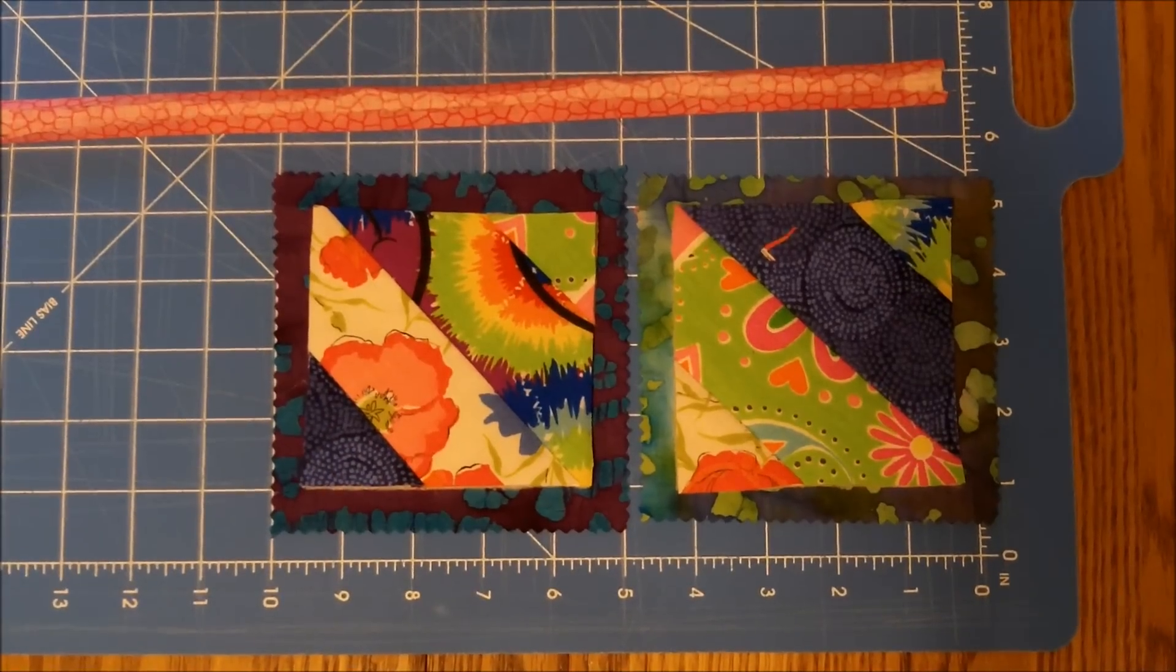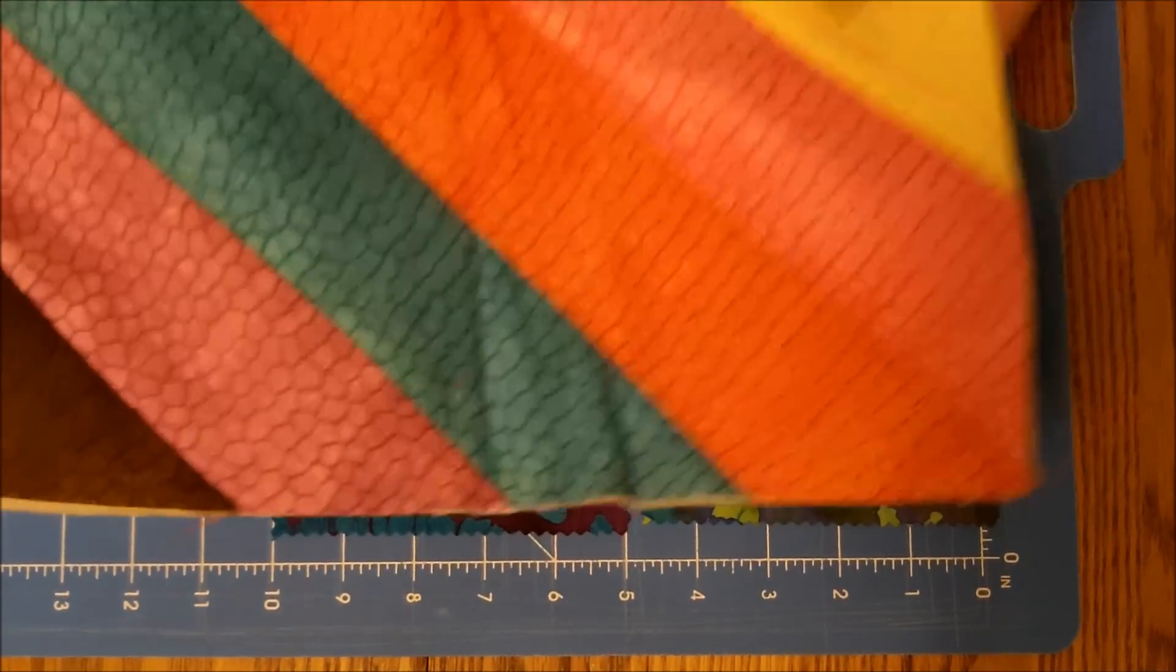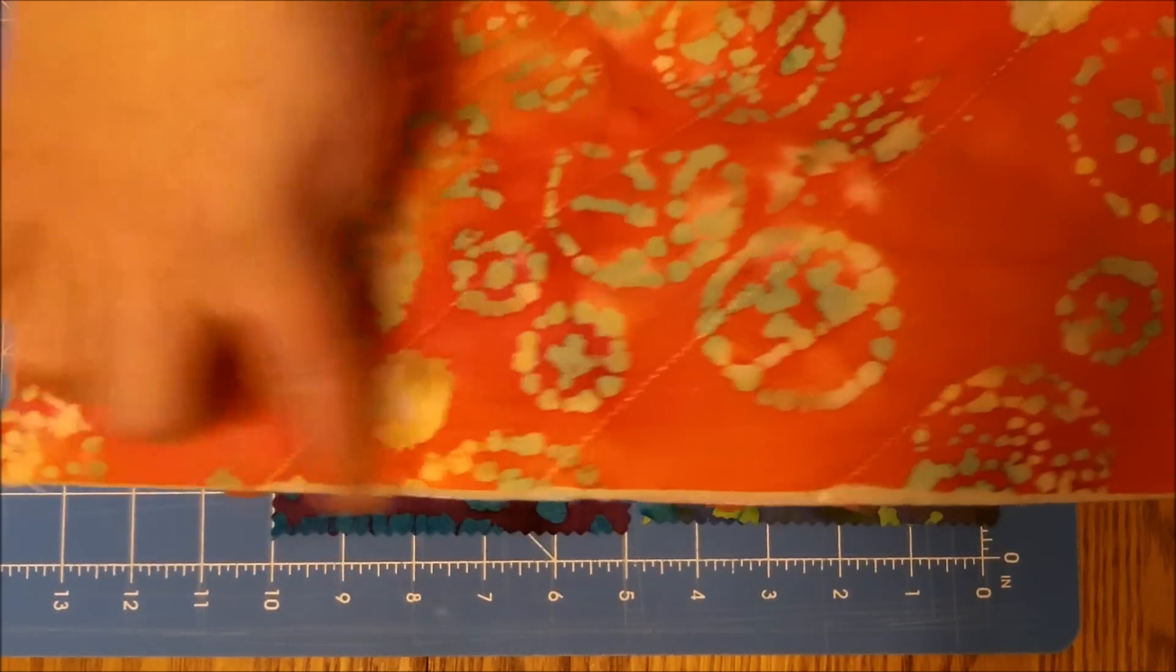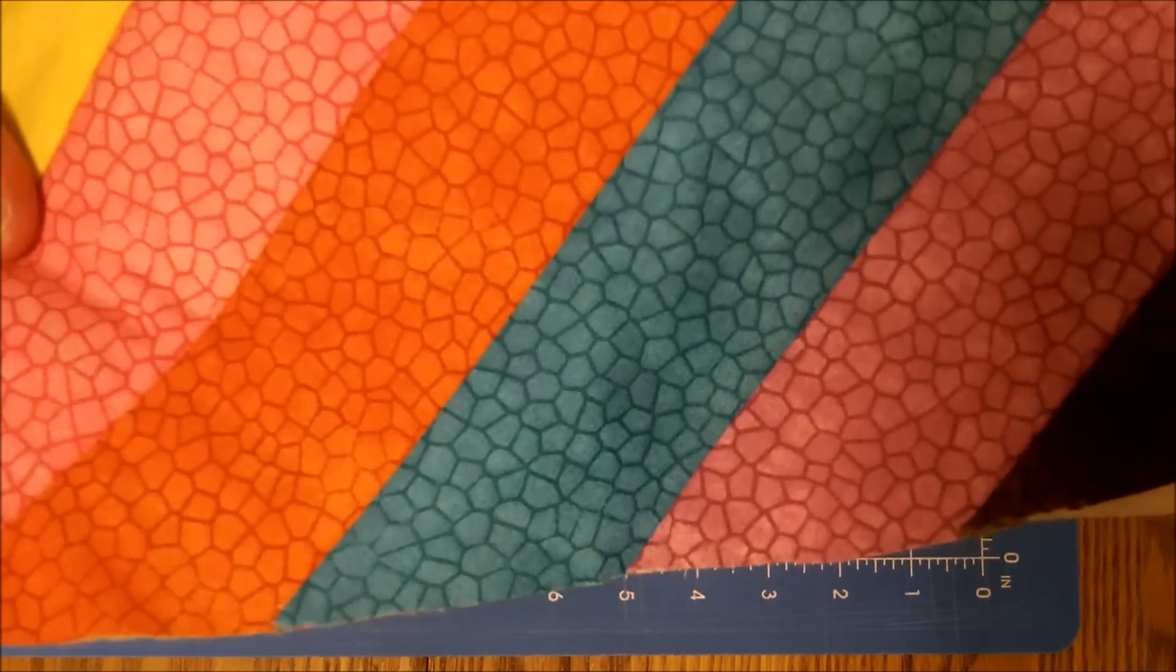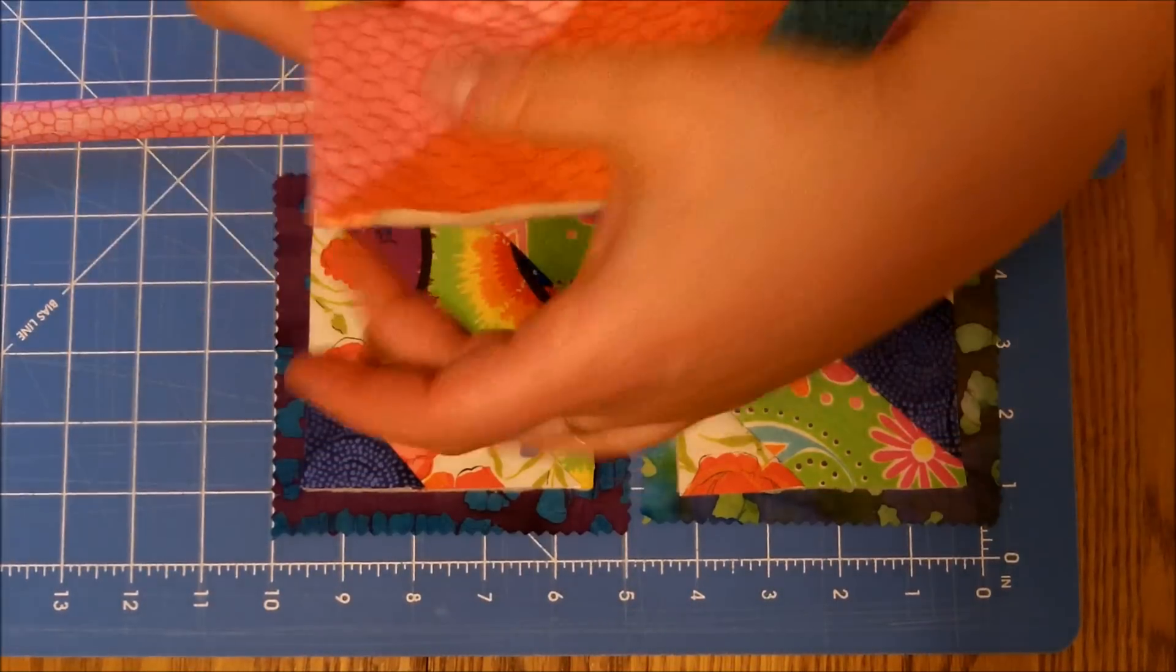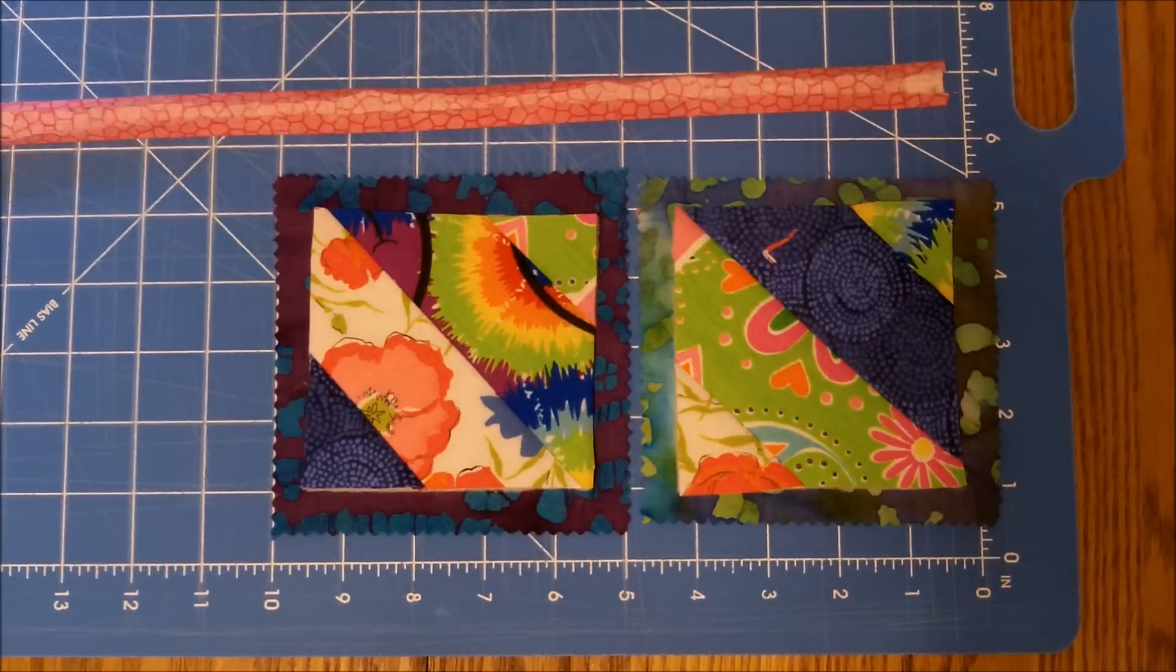Typically, when fold-as-you-go squares are made, they're made like this, where everything is sewn right to the edge and then cut off. It's not the way I make them because it makes it terribly difficult to sew them together. So I do it a different way.